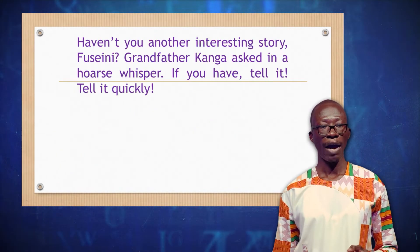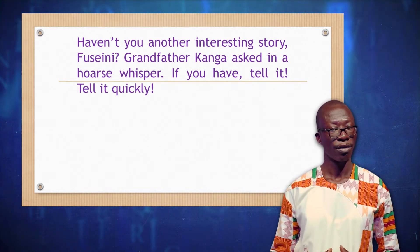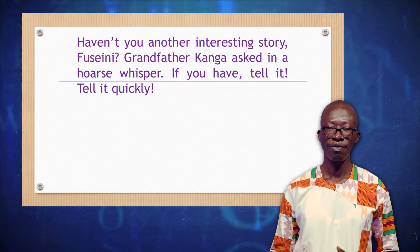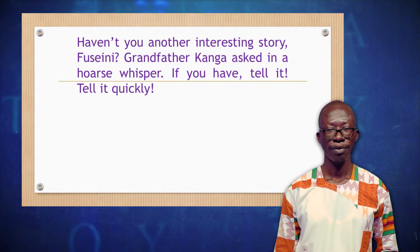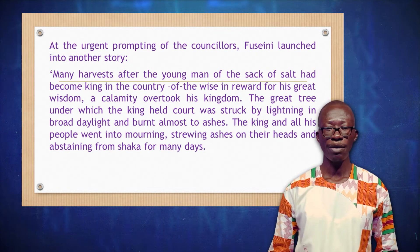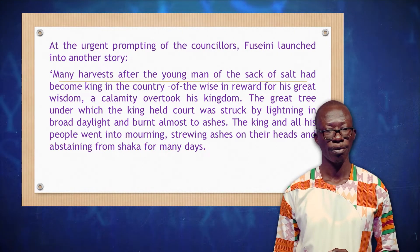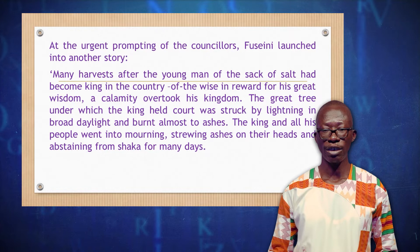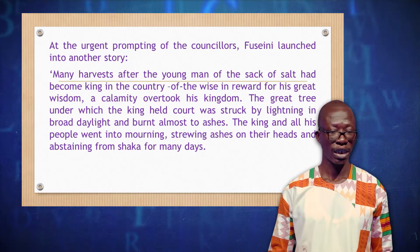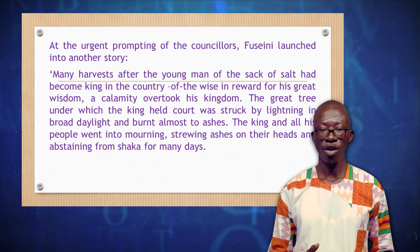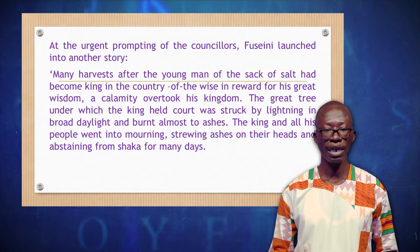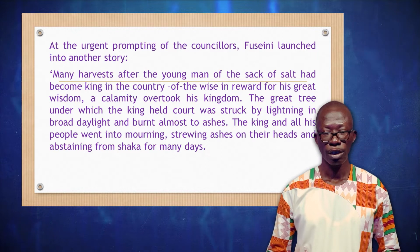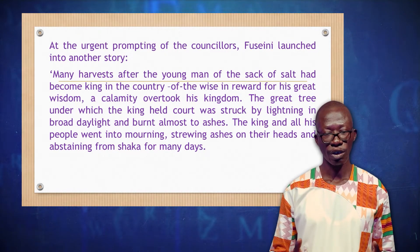Haven't you another interesting story, Fuseni? Grandfather Kanga asked in a hushed whisper. If you have, tell it. Tell it quickly. At the urgent prompting of the counselors, Fuseni lunged into another story. Many harvests after the young man of the sack of salt had become king in the country of the wise — in reward for his great wisdom — a calamity overtook his kingdom. The great tree under which the king held court was struck by lightning in broad daylight and burnt almost to ashes. The king and all his people went into mourning, throwing ashes on their heads and abstaining from food for many days.